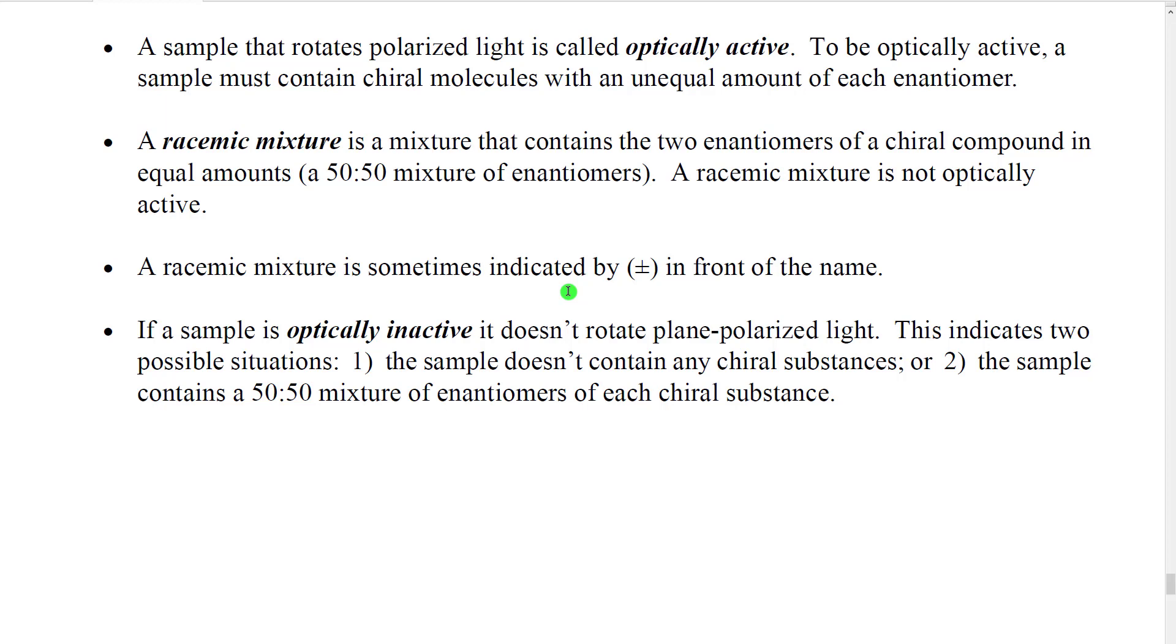While the light is actually being rotated inside the sample, the net rotation is zero, because as much as it's rotated in one direction, it's rotated the same amount in the opposite direction. We often indicate a racemic mixture by putting both a plus and a minus stacked up on top of each other in front of the name, thus indicating that both positive or clockwise rotation and negative rotation are occurring in equal amounts.